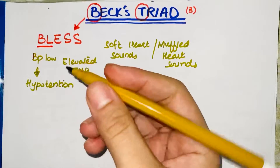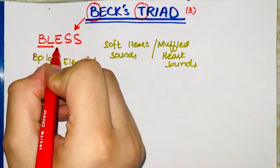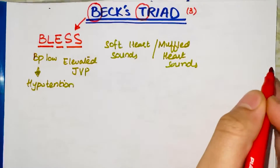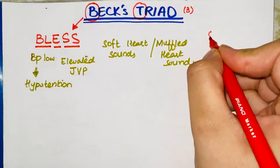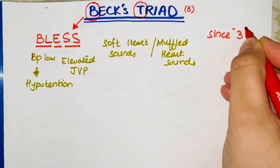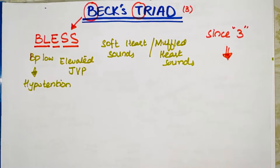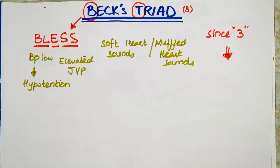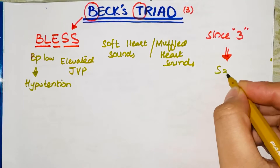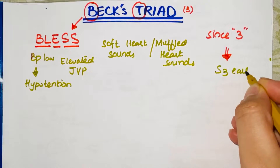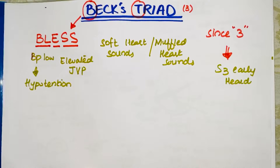This is the mnemonic — B-L-E-N-double-S — and one addition: since there are three points in this mnemonic, this gives you another hint that S3, the early third heart sound, is heard in Beck's triad.